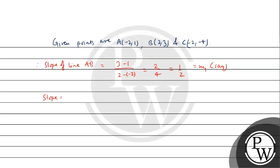Now, slope of line BC. This is Y2 minus Y1 upon X2 minus X1. So, BC will be -4 minus 3 upon -2 minus 2. Then, -7 upon -4. Minus to minus cancel out. Then, 7 upon 4. We'll call this M2.